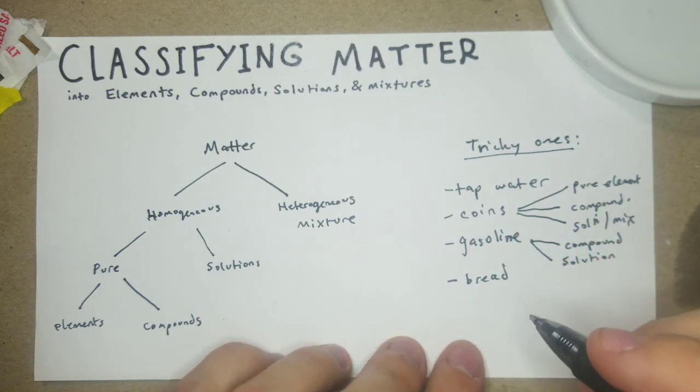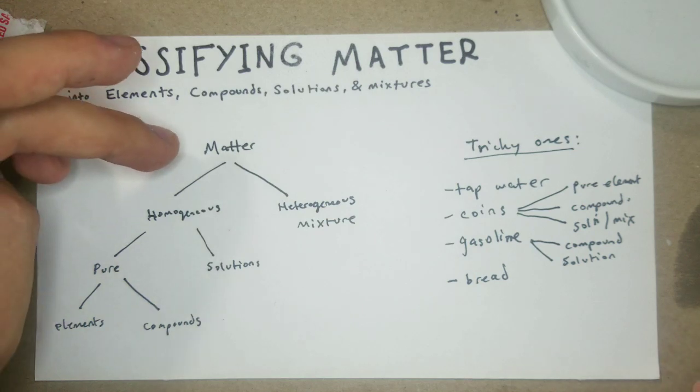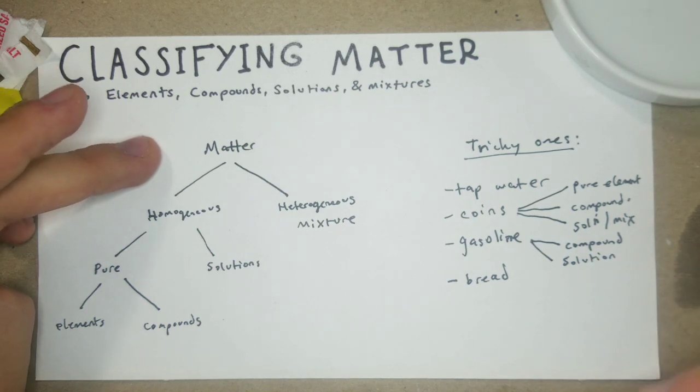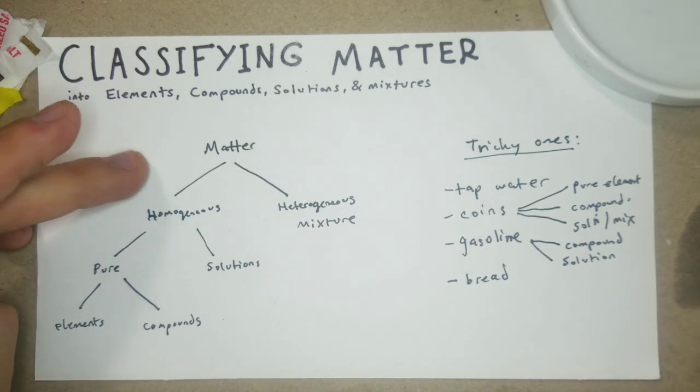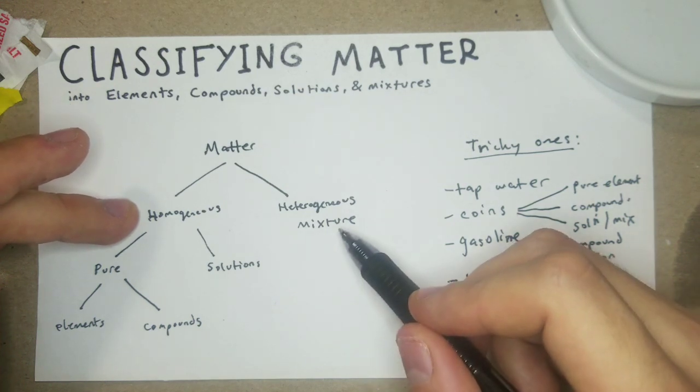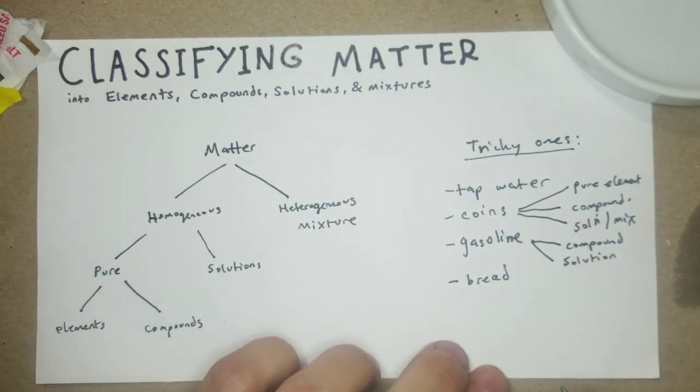Bread is another one that's caught some people in my class off guard. If you're defining it by just what you look at, depending on what kind of bread, maybe you only see one thing, maybe it's just plain white bread, there's no crust, that would make you think it's homogeneous. But you know that it's actually a mix of different ingredients, so that's a tough one.